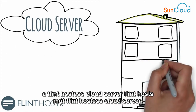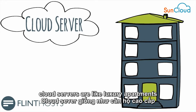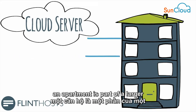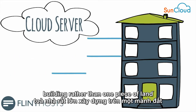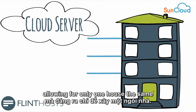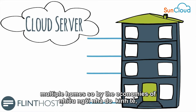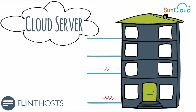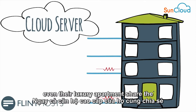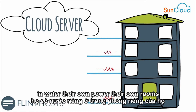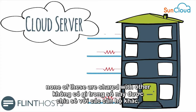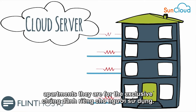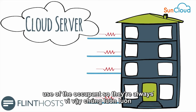The best option is a Flint Hosts cloud server. Flint Hosts cloud servers are like luxury apartments. An apartment is part of a larger building. Rather than one piece of land allowing for only one house, the same size piece of land is able to serve multiple homes, so by the economies of scale, the cost of a luxury apartment is considerably lower than that of a house. Even though luxury apartments share the same block, like houses, they have their own water, their own power, their own rooms. None of these are shared with other apartments — they are for the exclusive use of the occupant, so they're always available.